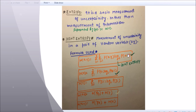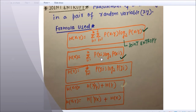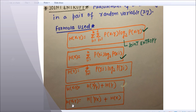H(X) is equal to summation of i equals 1 to k of p(x_i) log base 2 of p(x_i). Similarly, H(Y) is equal to summation of j equals 1 to j of p(y_j) log base 2 of p(y_j). And H(X|Y) is equal to H(X,Y) divided by H(Y), and H(X,Y) equals H(Y|X) plus H(X).